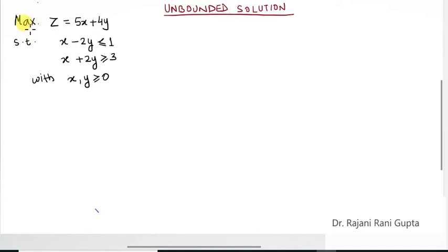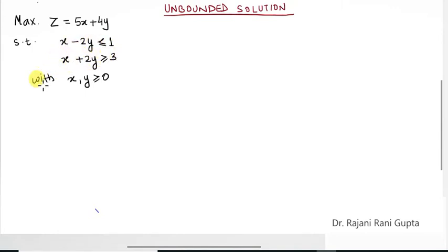The problem is: maximize the objective function Z = 5x + 4y, subject to the constraints: (1) x - 2y ≤ 1, and (2) x + 2y ≥ 3, with non-negativity restrictions x ≥ 0 and y ≥ 0. Let's name these constraints 1 and 2.